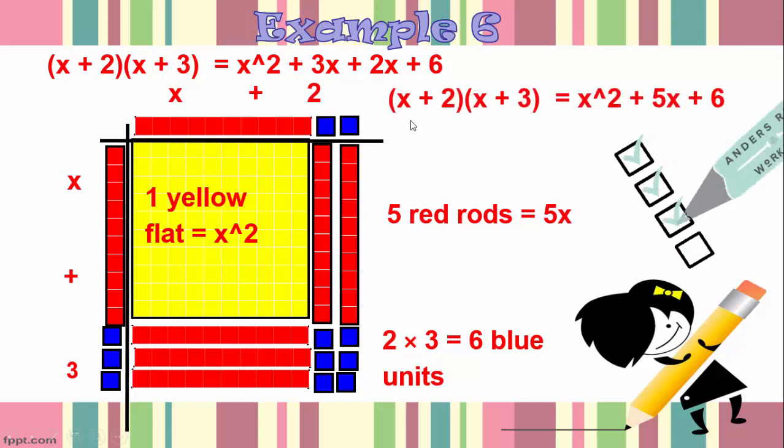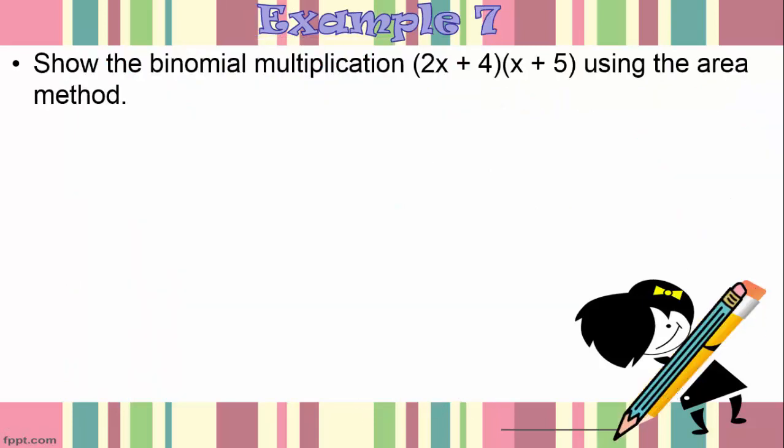So we find that x plus 2 times x plus 3 is equal to x squared from our yellow flat which represents x squared, 5x from our 5 red rods and then 6 from our 6 blue units.